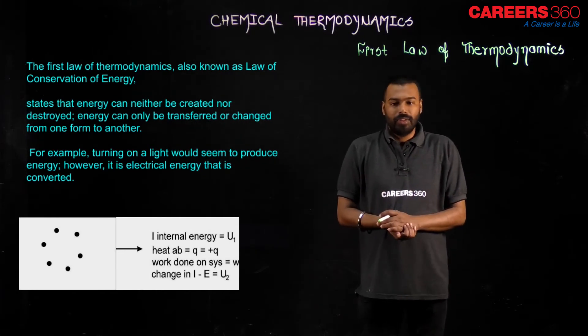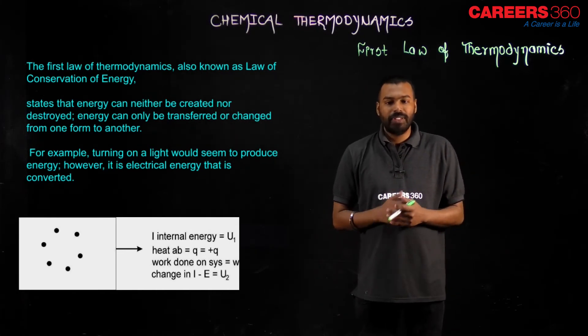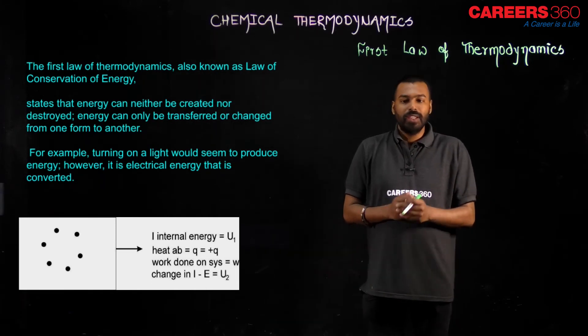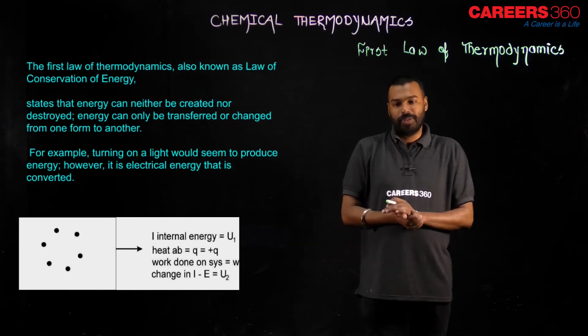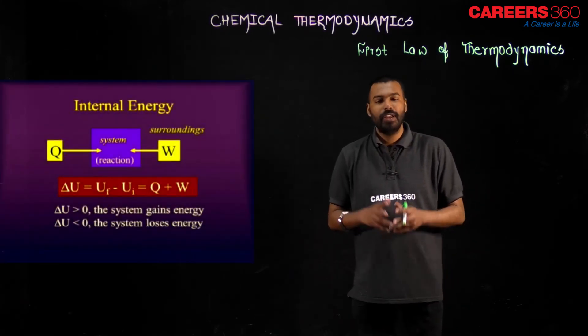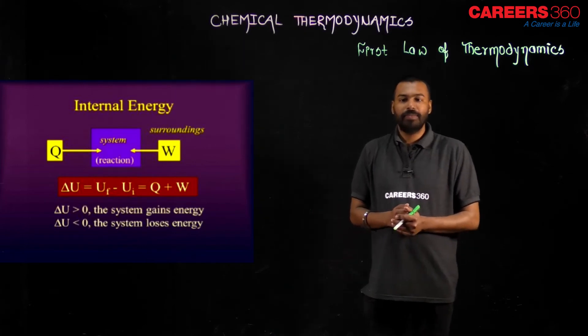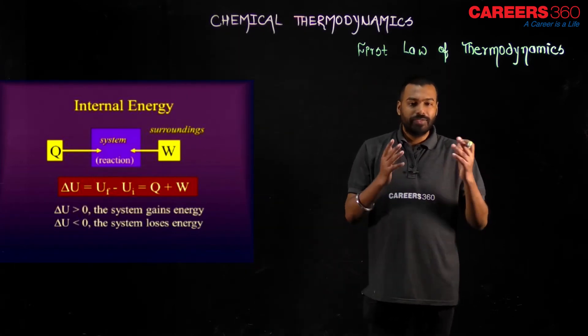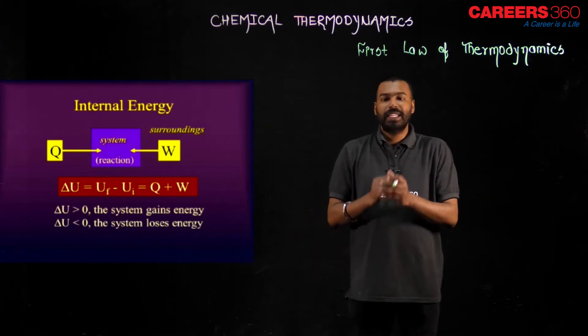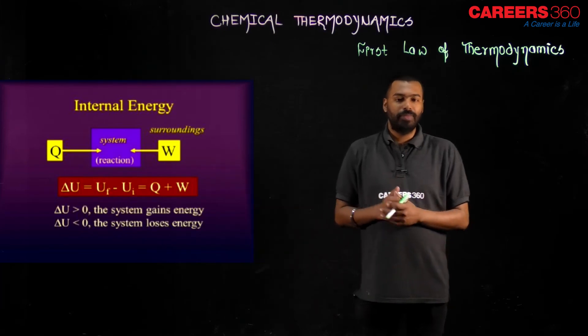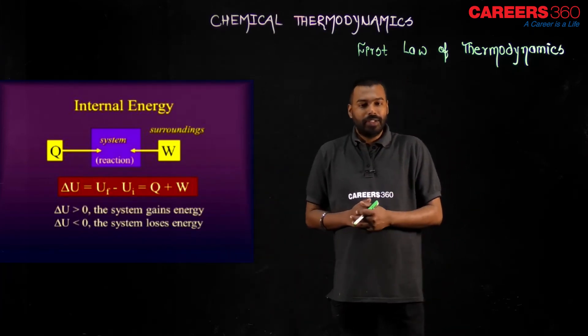in energy, minus E equals U2. This part you should remember. Let's see the final equation about the internal energy, which is helpful to give the equation of the first law of thermodynamics. The system contains Q and W, and delta U is